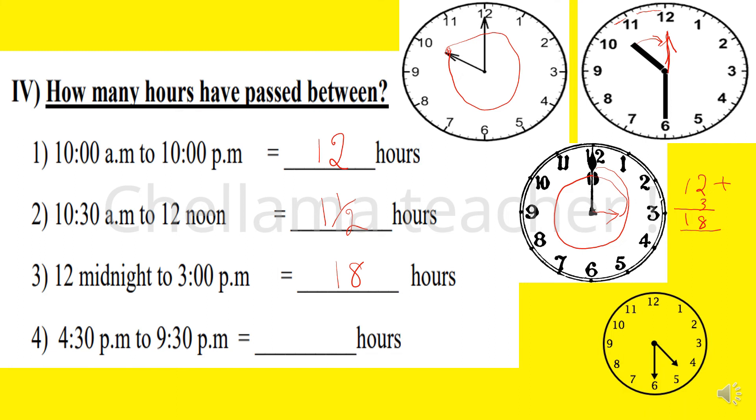Next question: 4:30 PM to 9:30 PM. Now it is 4:30, and this hour hand should move to between 9 and 10. So 4:30 to 5:30, 5:30 to 6:30, 6:30 to 7:30, 7:30 to 8:30, 8:30 to 9:30. Both are in PM only, so only this much. Totally how many hours? There are 5 hours difference.